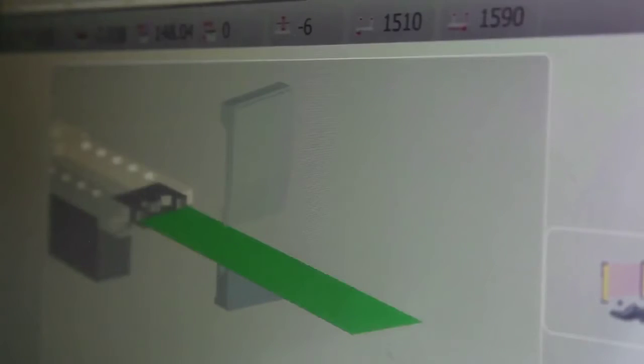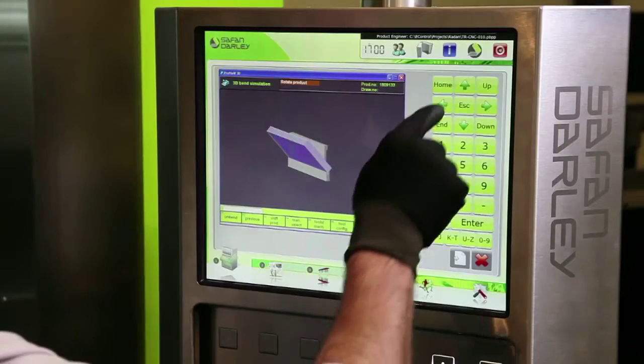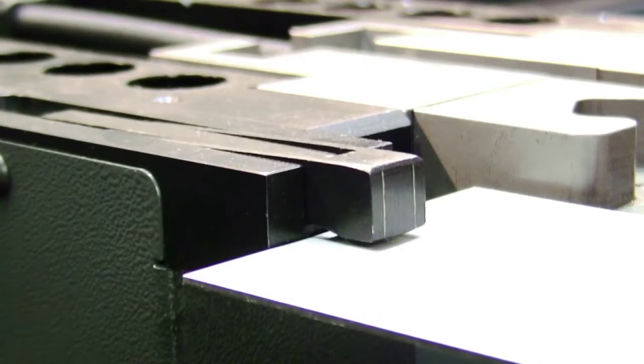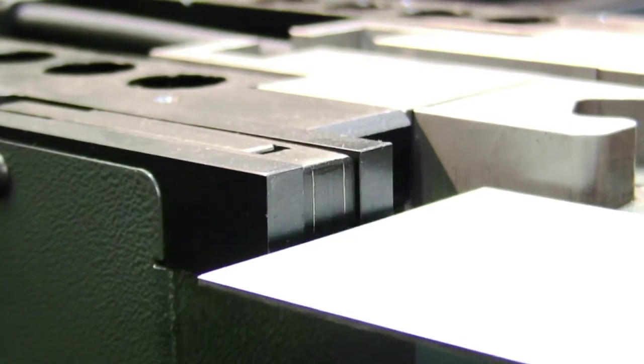The regular version comes standard with the EC20 control, optionally extendable with the 3D graphical EC30 control. The optional e-bend S sheet thickness measuring system allows extremely precise bending. Based on the data measured, the bending program is immediately adjusted.